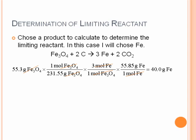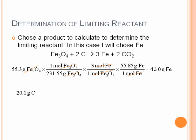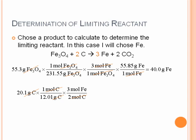Starting with 20.1 grams of carbon and following the same process, we divide by the atomic weight of carbon, 12.01 grams per one mole. Then we convert moles of carbon to moles of iron using the mole ratio: three moles of iron to two moles of carbon — two moles of carbon on the bottom, three moles of iron on top. Multiplying by the molar mass of iron gives the amount of iron produced assuming all the carbon was consumed, and we get 140 grams of iron.